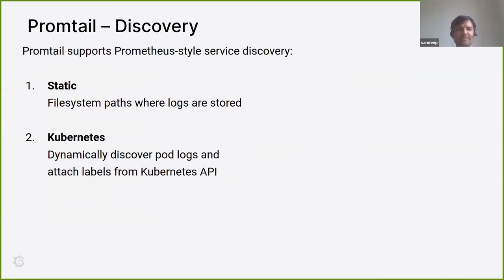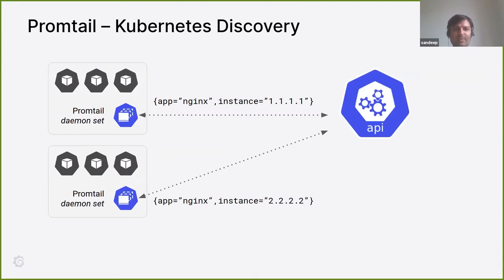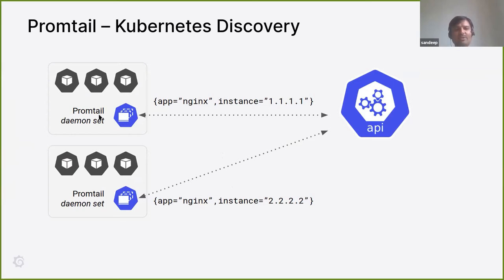In Kubernetes mode, Promtail uses the same code from Prometheus for service discovery. If you have the same relabeling and service discovery config given to Promtail, you would get the same logs and same labels as the metrics from your applications. Promtail runs as a DaemonSet on each node, talks to the Kubernetes API, finds which pods are running on that node, pulls logs from containers, attaches labels based on your labeling rules, and pushes the logs to Loki. Here you can see two Nginx instances running on different nodes with the label nginx and the IP of the node.